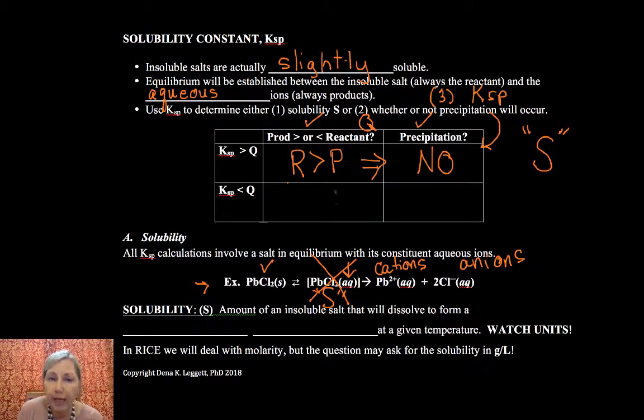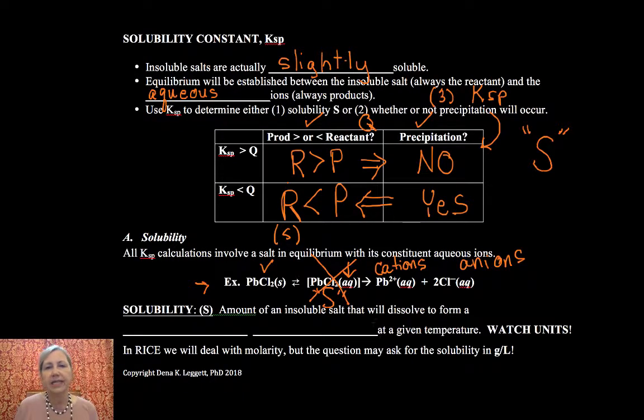If K is less than Q, that means K is too big, that means I have too much product, my products are greater than my reactants. So it's going to shift in the direction of my reactants to consume product, form reactant. Well, since my reactant is a solid in this case, I'm going to form a precipitate. So that's a yes on that one.